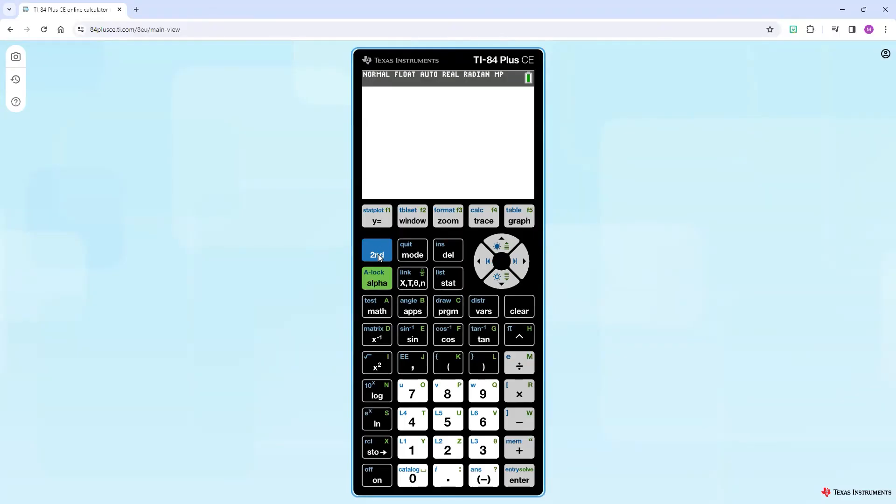The inverse of A, I have to go to second matrix, choose A, which was number 1, and then choose the X inverse. Once I press that, it's going to show me all these decimals. I don't want that. So I'm going to go to math. Already selected as fraction. So hit enter two times. And that's what we're going to write down.